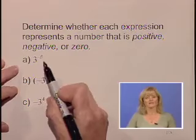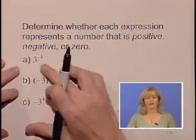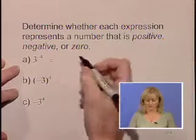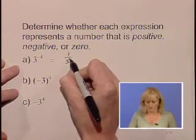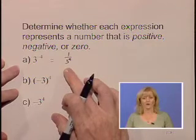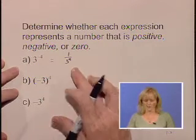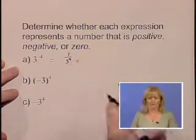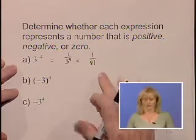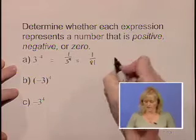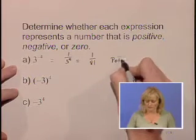With 3 to the negative 4, notice we have a negative exponent. By definition, that negative exponent transforms our problem into 1 over 3 to the positive 4. Simplifying that a little further, we have 1 over 81. 1 over 81, although it's a fraction, it is a positive number.